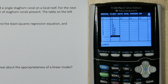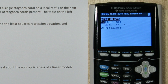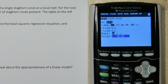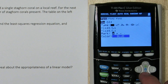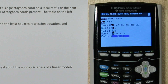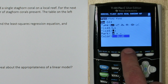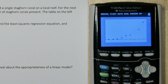To make a scatterplot, press 2nd and y equals. This is our stat plot menu, and we'll press enter on plot 1. Press enter again to turn it on. It's already set to scatterplot, and we have our number of years as explanatory variables and our number of staghorn corals in list 2, so we're good to go. Press zoom and 9, and here's our scatterplot.